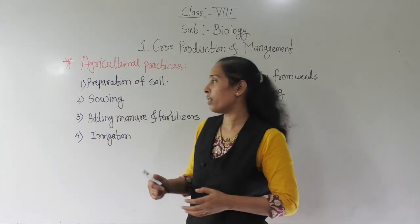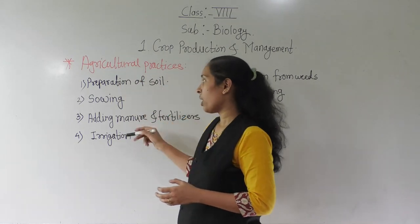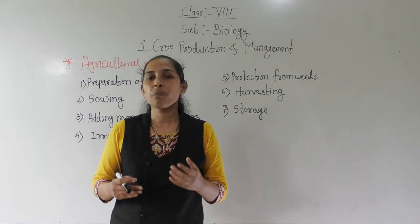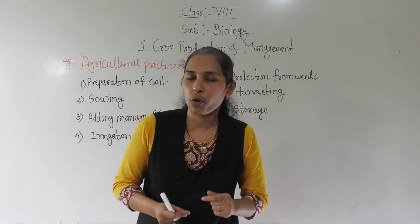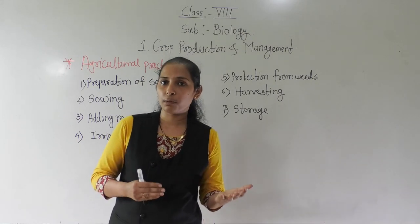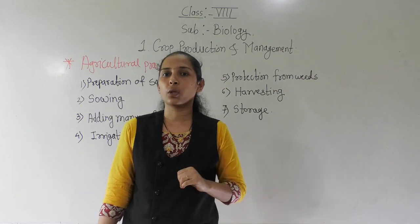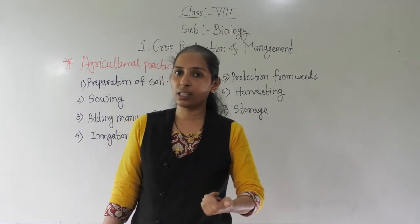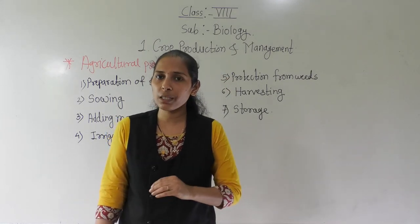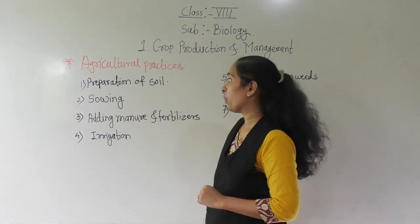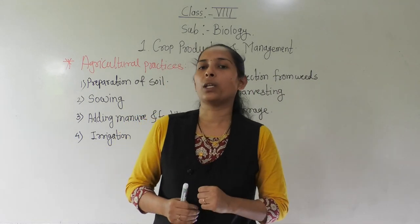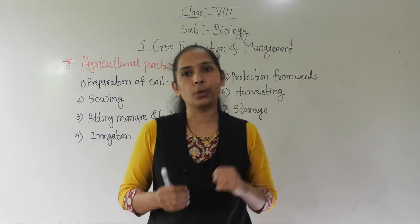Each and every agricultural practice we are going to study deeply one by one from the next lecture. Today we discussed the different types of crops: kharif crops grown in rainy season, rabi crops grown in winter season, and Zaid crops grown mainly during summer season. We also discussed the different agricultural practices. Thank you, I will see you in the next video. Goodbye.